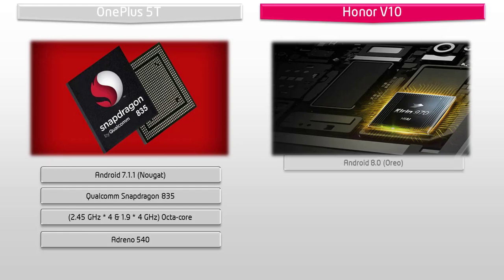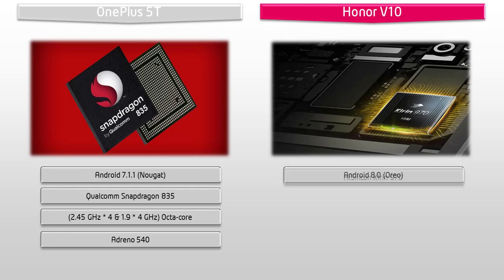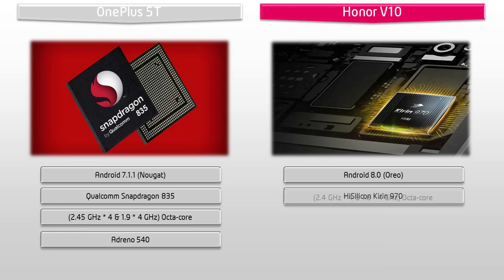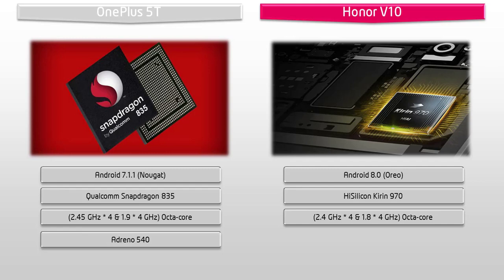Whereas the Huawei Honor V10 works on Android 8.0 Oreo and is equipped with a HiSilicon Kirin 970 processor with a Neural Network Processing Unit, running at 2.4 and 1.8 GHz octa-core and with a GPU Mali-G72 MP12.